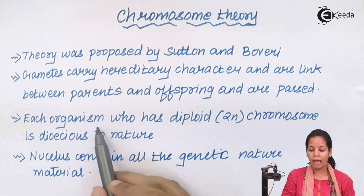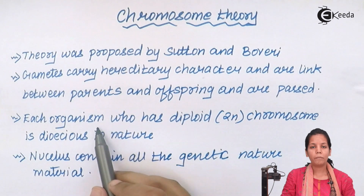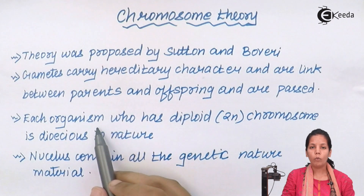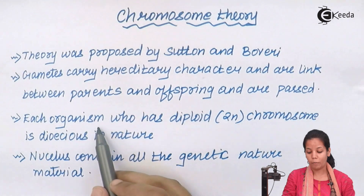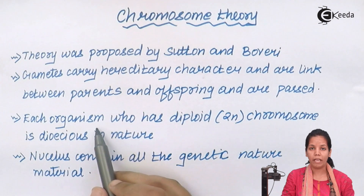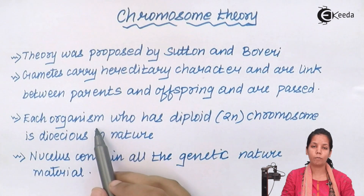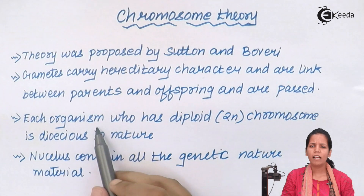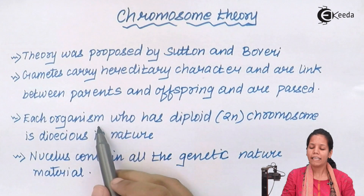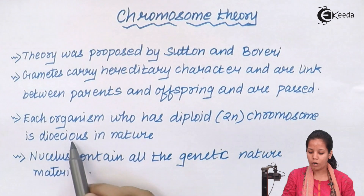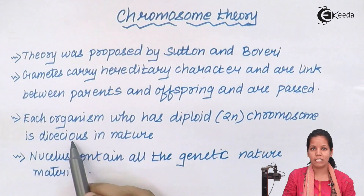Each organism with diploid number of chromosomes will have them in the somatic cells, whereas the haploid number of chromosomes are present in the germ cells. An organism that is diploid can also be called dioecious in nature.